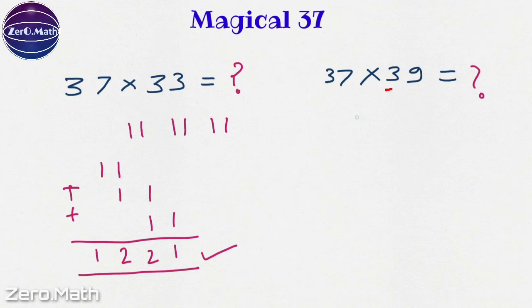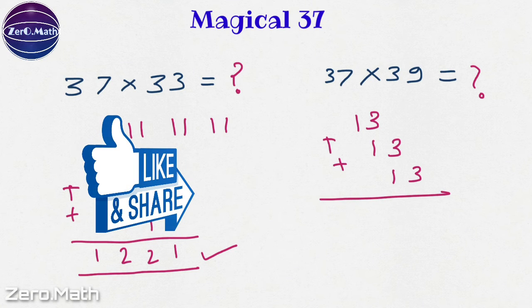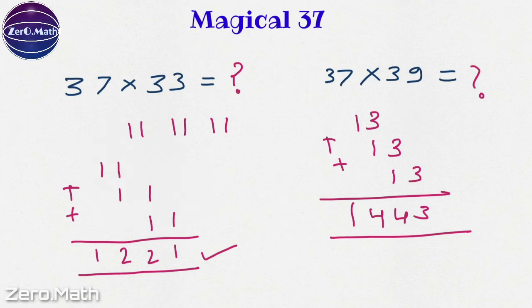Let's multiply 37 by 39. So 39 by 3 is 13. We'll write 13 three times, one below other and we'll add it. So what we'll get? 3, 3 plus 1 is 4, 3 plus 1 is 4 and 1. So 1443 is the multiplication of this sum.